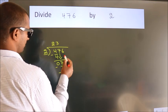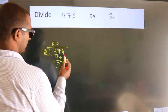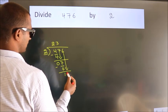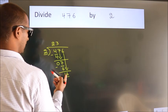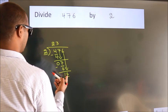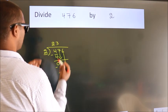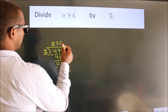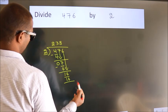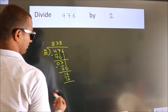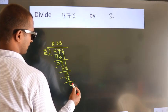After this, bring down the beside number. So, 6 comes down — so we have 16. When do we get 16 in the 2 times table? 2 eights are 16. Now we subtract. We get 0.